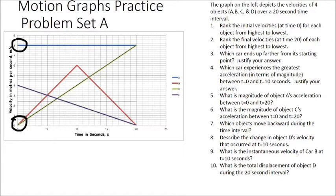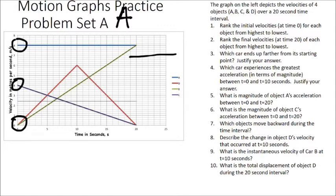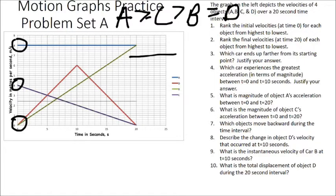The same can be said for object B, starting off with a velocity of zero. Object C, on the other hand, is starting off with a velocity of about positive 4 meters per second. So if we want to rank these from highest to lowest: A has the highest velocity at 8, which is greater than C at about 4, which is greater than B, which was equal to the velocity of D. So that's our answer to number one.